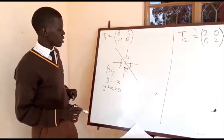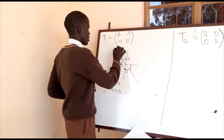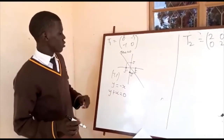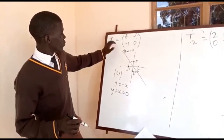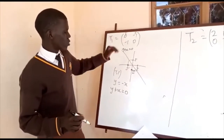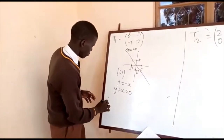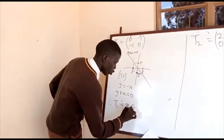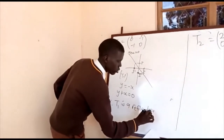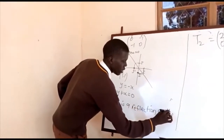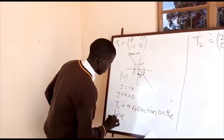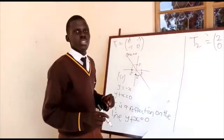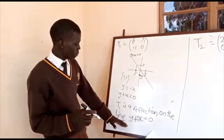Rearranging Y equals negative X gives us Y plus X equals zero. Therefore, this is the equation of the line of reflection. We can now describe T1: therefore, T1 is a reflection on the line Y plus X equals zero.